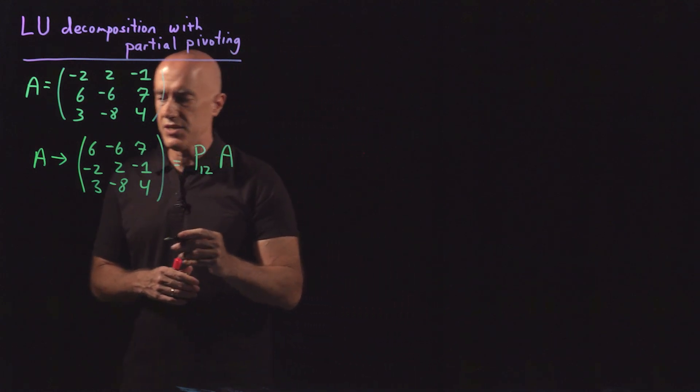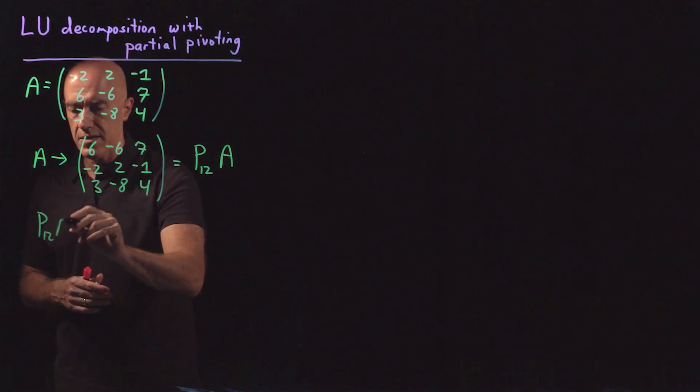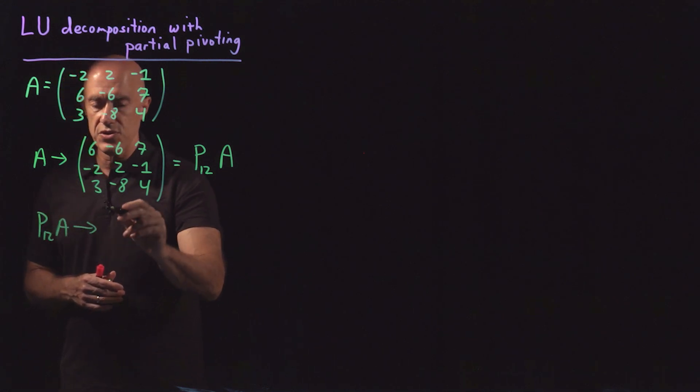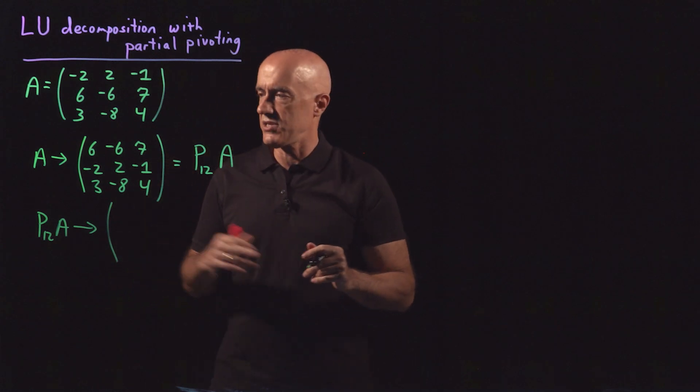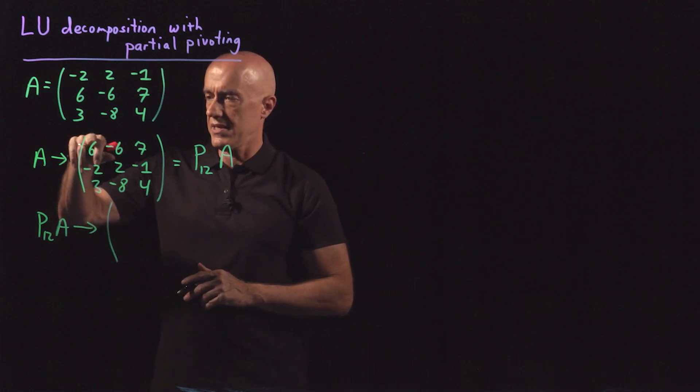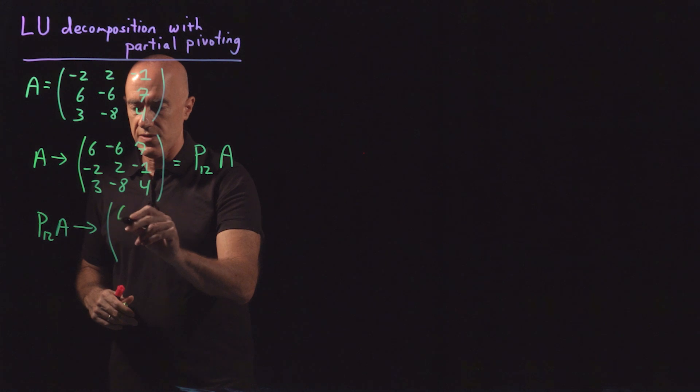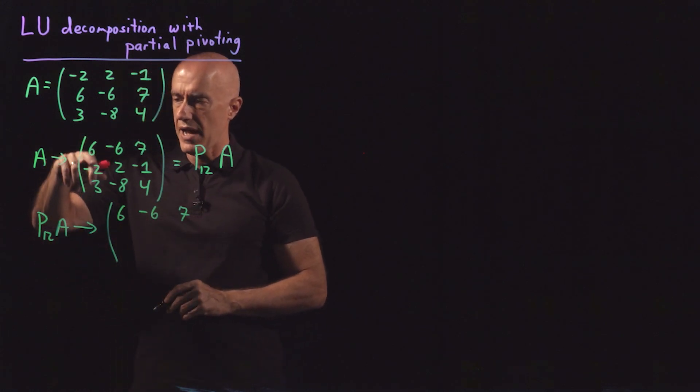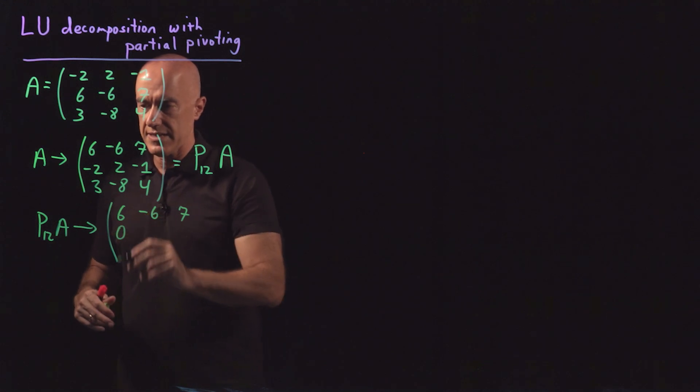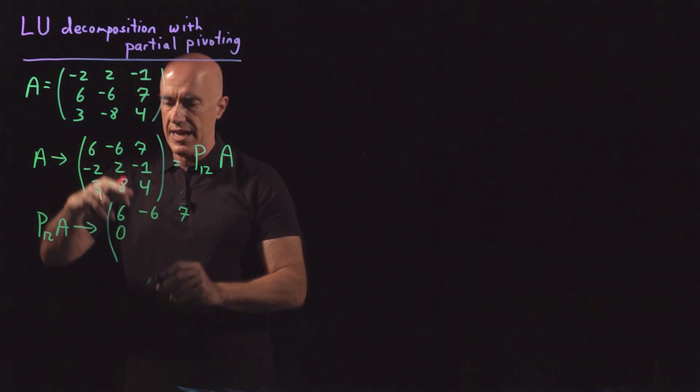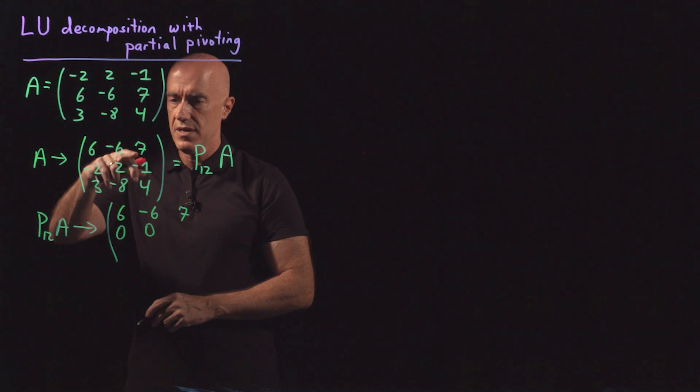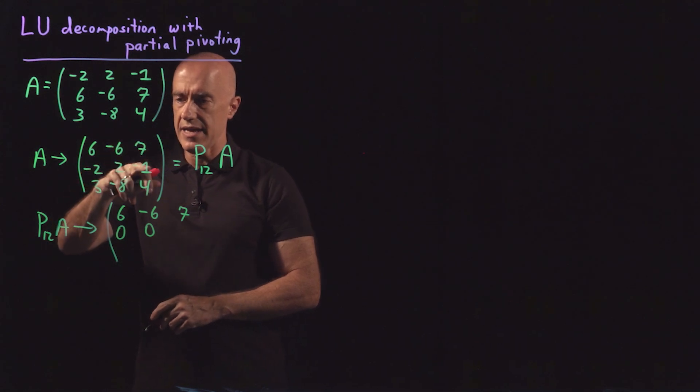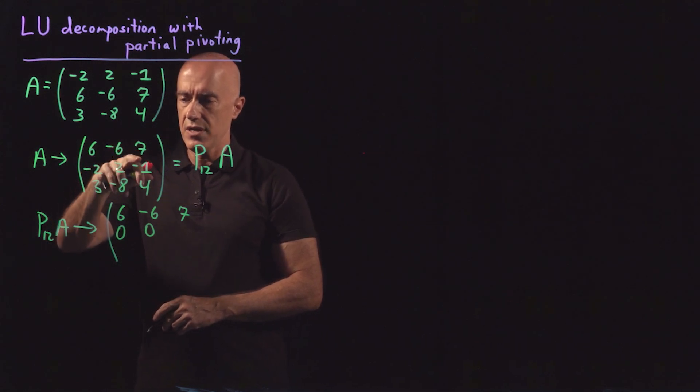Okay, now we do Gaussian elimination. So P12A goes to, let me do two steps of Gaussian elimination here. So we'll use the 6 to eliminate the minus 2. So the first row is 6, minus 6, 7. We divide through by 3 and add. So we get 0, 0, and 7 thirds minus 3 thirds is 4 thirds.